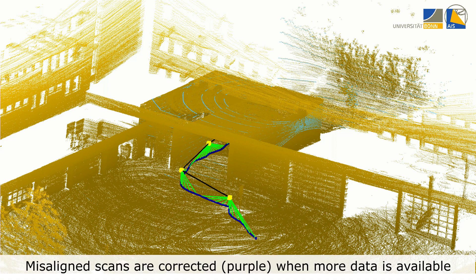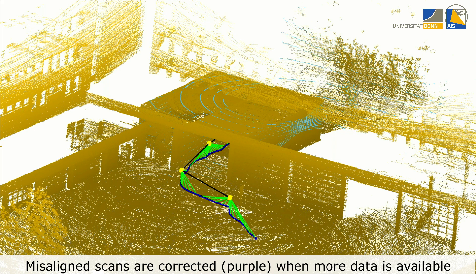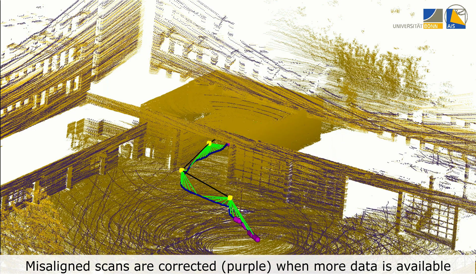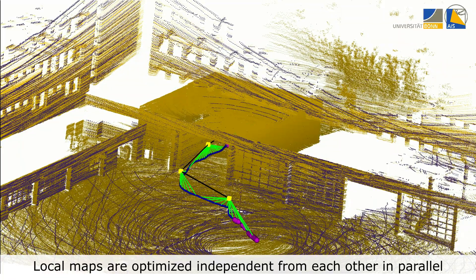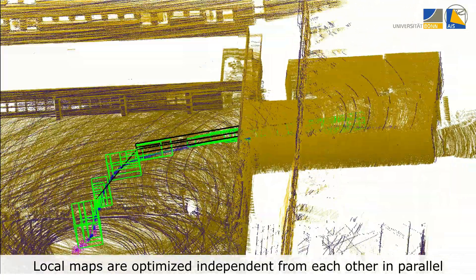Local maps that are added to the pose graph are subject to our refinement method, reassessing the alignment of 3D scans when more information is available. On their local timescale, subgraphs are independent from each other, allowing to minimize errors independent from other parts of the graph.